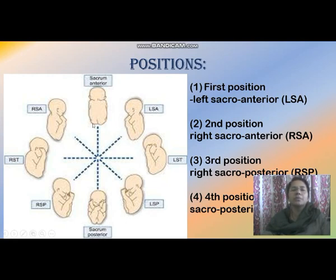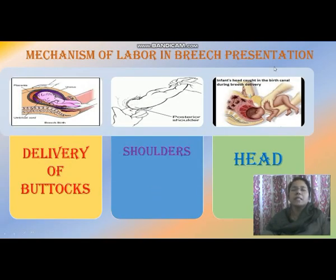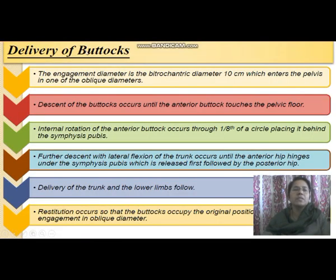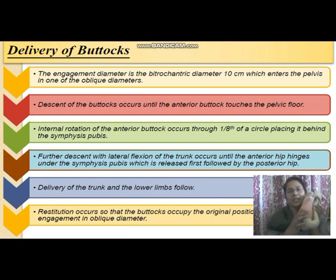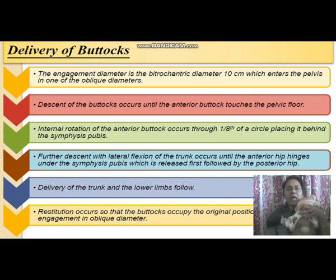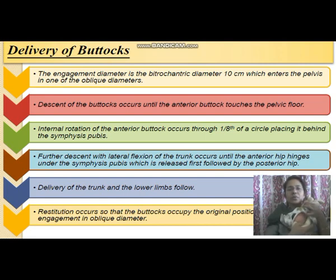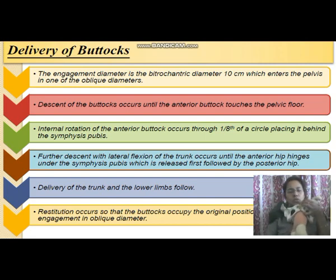The mechanism of labor in breech presentation has three steps: delivery of the buttocks, shoulder, and head. For the buttocks: engagement takes place in the bitrochanteric diameter of 10 cm in an oblique diameter. Descent occurs until the anterior buttock touches the pelvic floor, then internal rotation through one-eighth of a circle placing it behind the symphysis pubis. Further descent and lateral flexion of the trunk occur until the anterior hip hinges under the symphysis pubis. Delivery of the trunk and lower limbs follow, then restitution returns the buttocks to the original position.